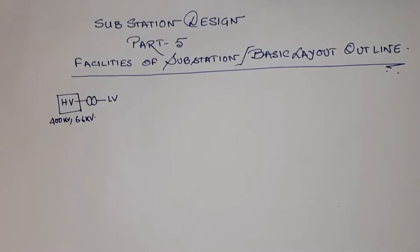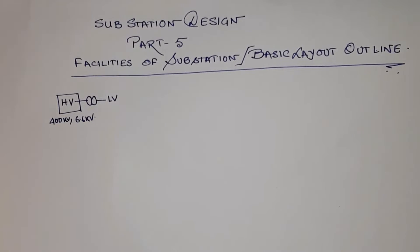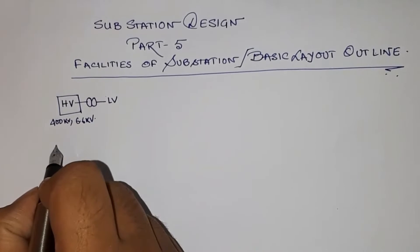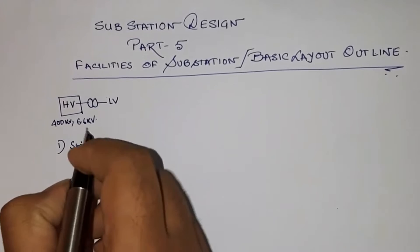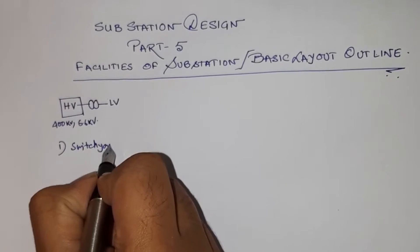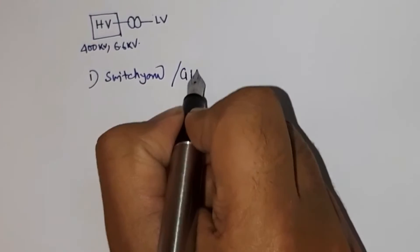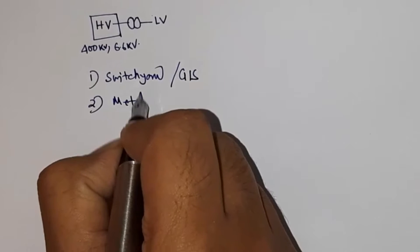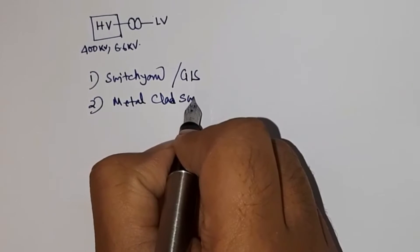As already mentioned in earlier videos, for voltage levels of 66 kV, 132 kV and above, the equipment used may be an outdoor switchyard or a GIS (Gas Insulated Switchgear). For below 33 kV, it is metal-clad switchgear which is of the indoor type. So for high voltage systems there may be an outdoor switchyard, or it could be GIS, and for MV and LV levels it shall be metal-clad switchboard or switchgear.